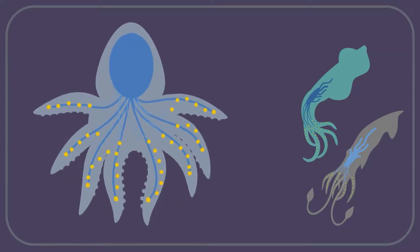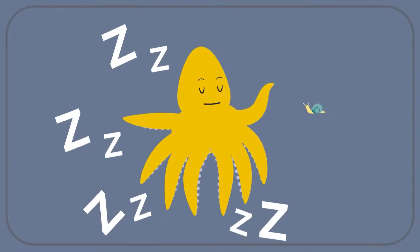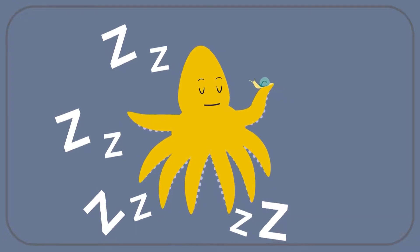In fact, most of their neurons are found in their arms, not their central brain. And octopuses can use their arms to do pretty remarkable things like taste, touch, and even move without input from their central brain.